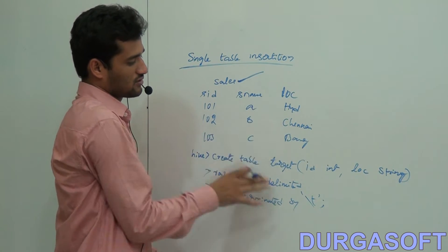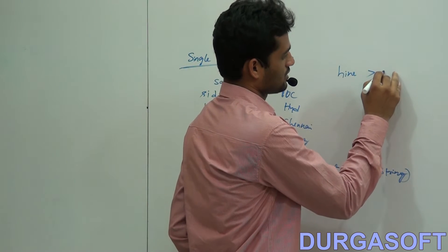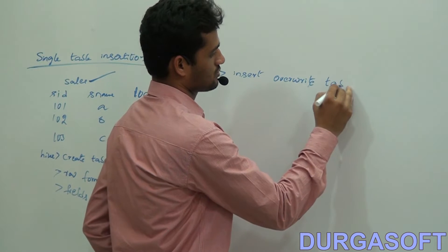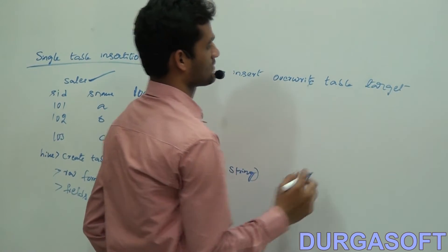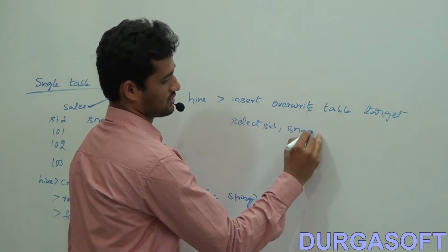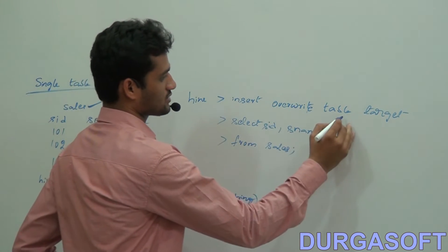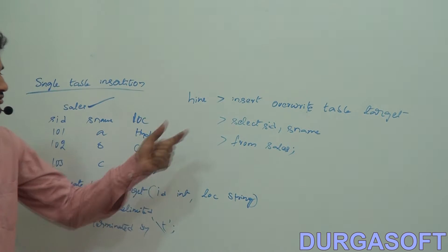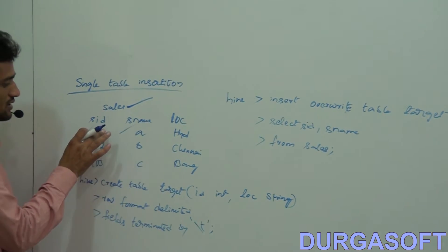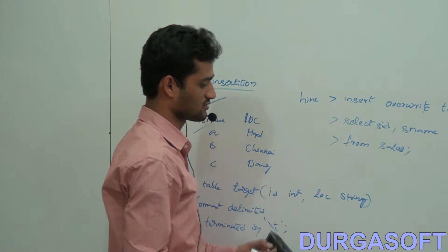Now I'll apply a query and keep the output into this target table. The query is: INSERT OVERWRITE TABLE target SELECT SID, S_name FROM sales. I'm inserting by overwriting — putting SID and S_name from the sales table into the target table.